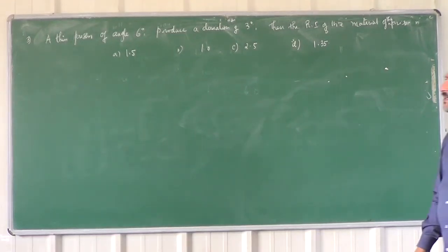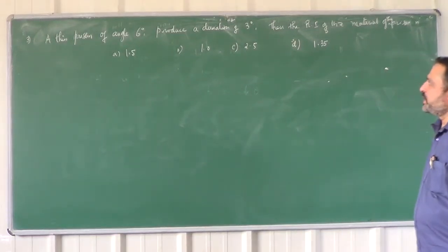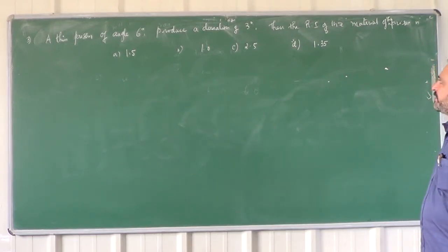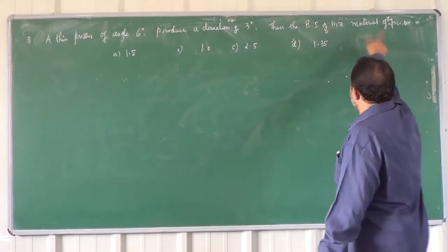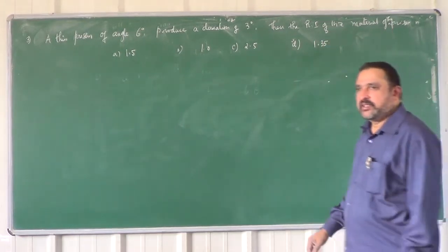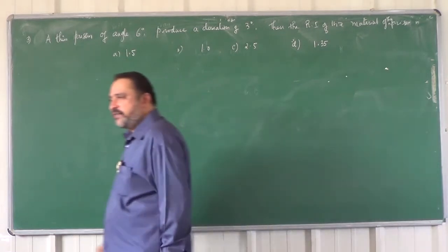A thin prism of angle 60 degrees produces a deviation of 3 degrees. Then the refractive index of the material of the prism is - we have been asked to calculate the refractive index.